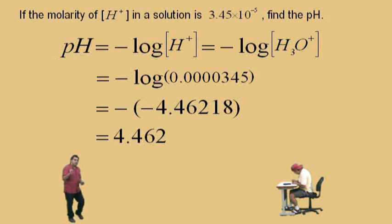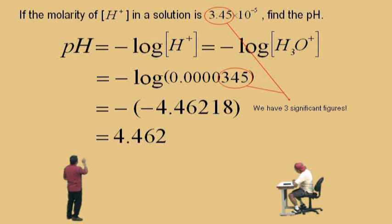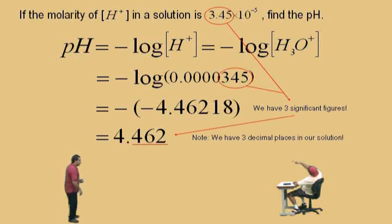That's because generally in chemistry, you have to worry about significant figures. And the way this works is you look at your given information. We were given that the hydrogen ion concentration was 3.45 times 10 to the negative 5th. That's 3 significant figures there. When you do a logarithm calculation with 3 significant figures, your answer must have 3 decimal places. So if we have 3 significant figures, notice our answer here has 3 decimal places, and that's the rule for significant figures generally in any chemistry class.